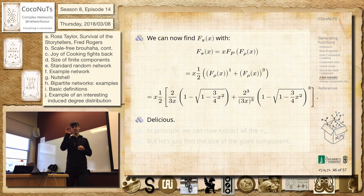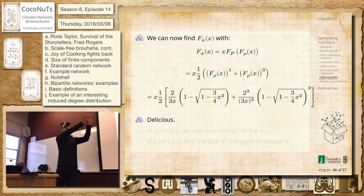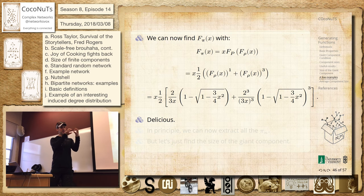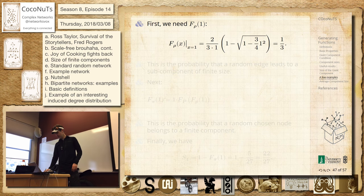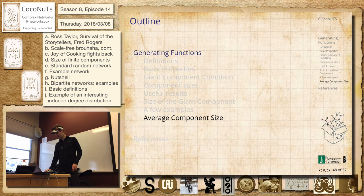Generating functions: the probability for k is the number that's attached to x to the power of k in this function. So we did all that. That was fun.